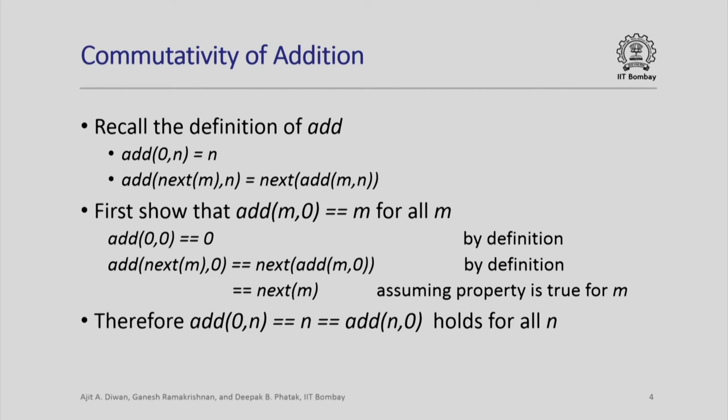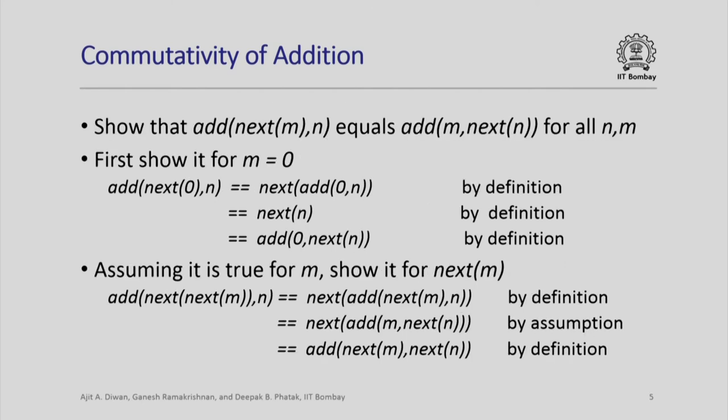We know that this property holds when m = 0. Now we will assume it holds for an arbitrary m and show it holds for next(m). But before that we need to prove an intermediate property. This says that add(next(m), n) = add(m, next(n)) for all m and n. Note that next is just a notation for m+1. So this property says that adding m+1 to n gives the same number as adding m to n+1.